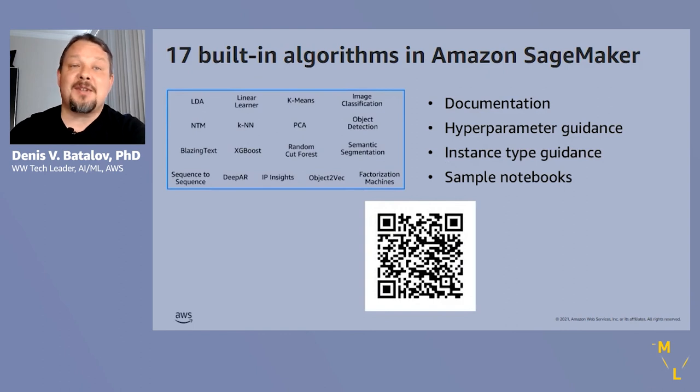So, to summarize, for each of the built-in algorithms, ample documentation exists. Scan the QR code to get to the docs that include guidance on the choice of hyperparameters and instance types. You're now probably thinking which of these algorithms would help you with your use case and how to start. So, many simple notebooks are also available for you to clone and adapt to your use case.